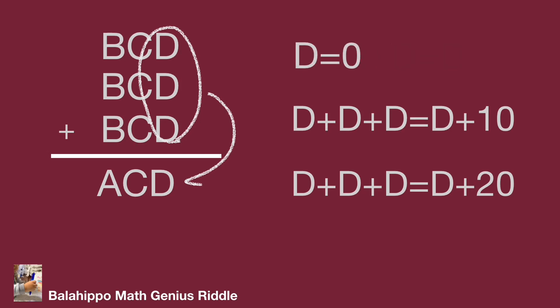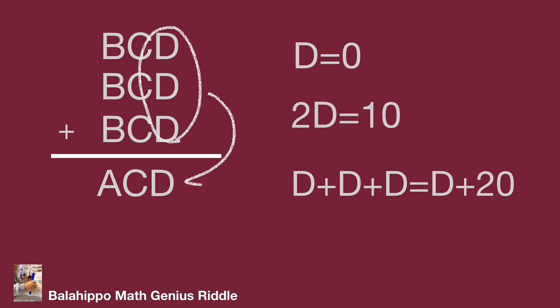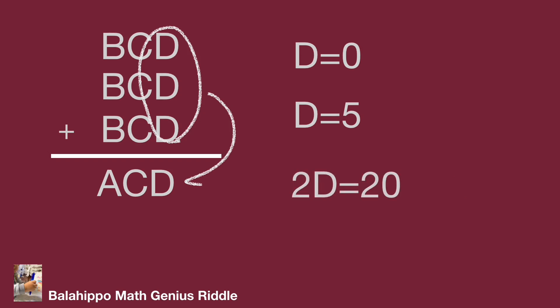From the second condition, 2D = 10, so D = 5. From the third condition, 2D = 20, so D = 10. But 10 is not a single digit, so we remove this condition. After that, we review the two valid solutions: D = 5 and D = 0.